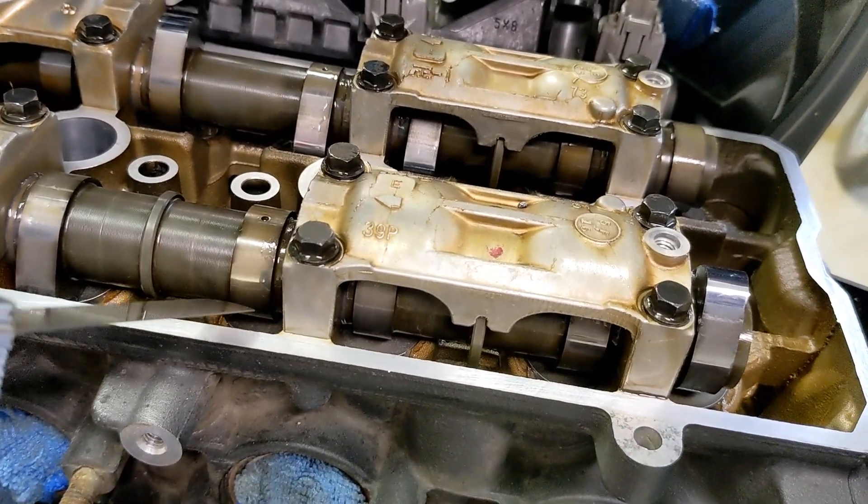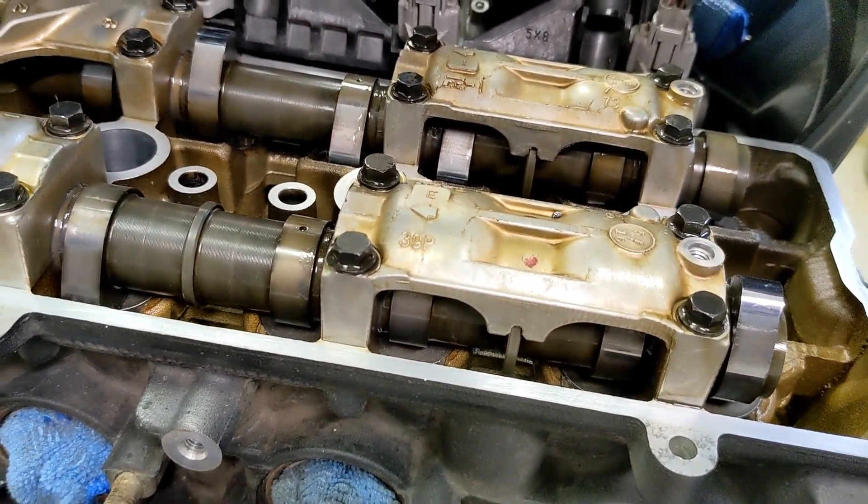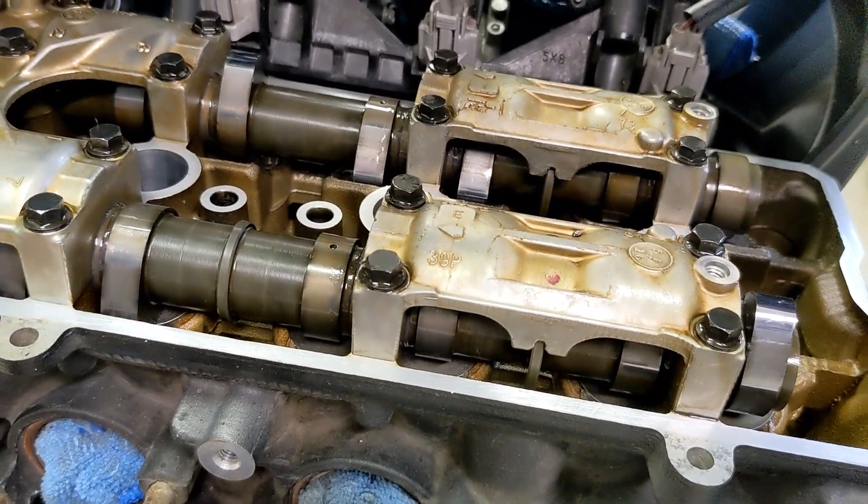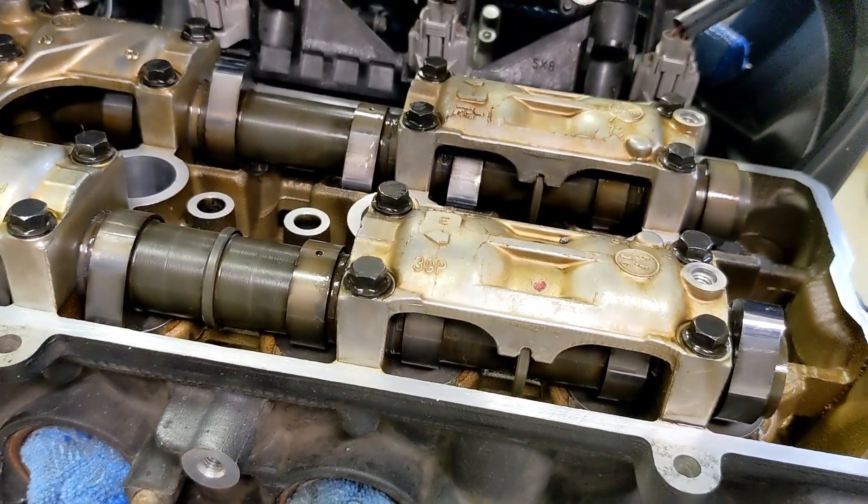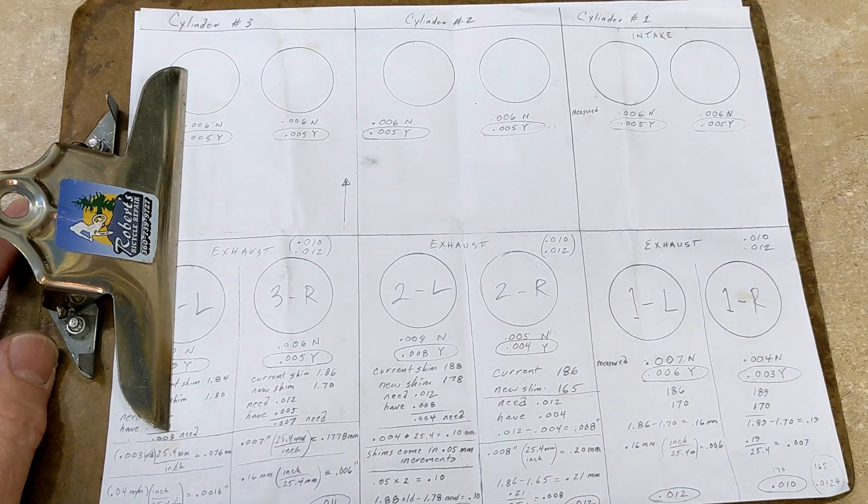Hopefully everything is between 10 and 12 now on the exhaust. They were all between like 3 and 7 before, so I'll get back to you. I'm super relieved because I don't want to have to take those camshafts out again.